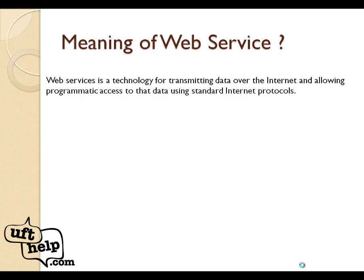It's a technology or a way of transmitting any information over the internet. So the idea is any information which is getting transmitted over the internet, we will use web services. It allows programmatic access to our information — we have focused access to that information — and what we use to access that information is standard internet protocols like IP, TCP, or HTTP. So that's basically what web services are — a service provided over the internet which helps us in transmitting data or information.